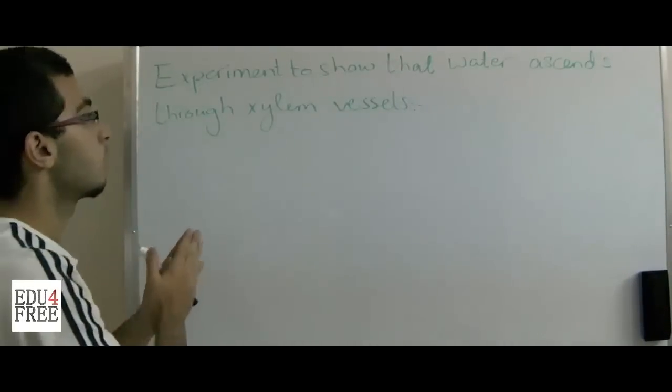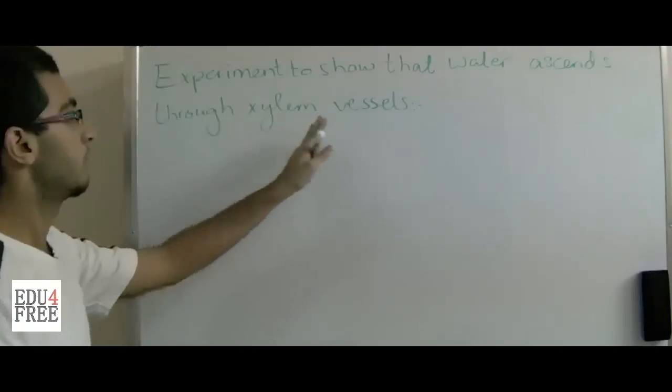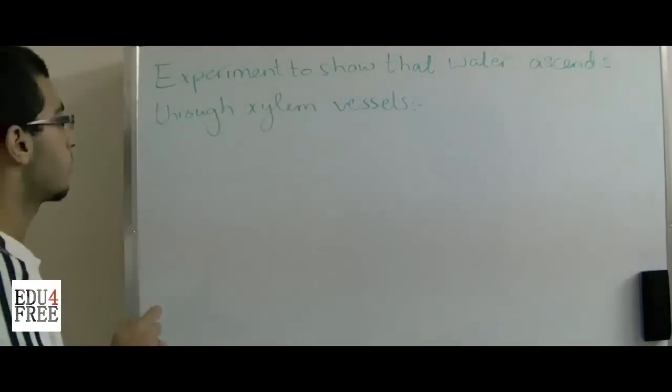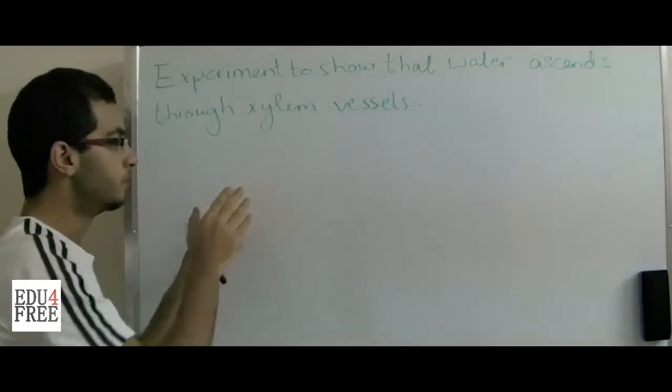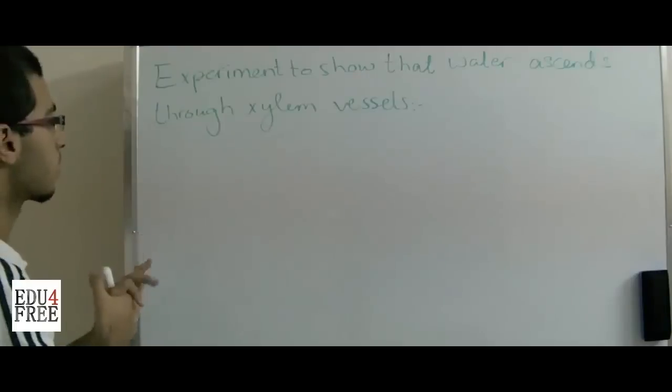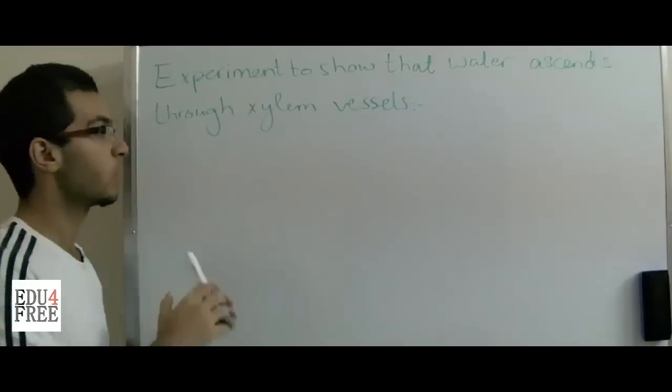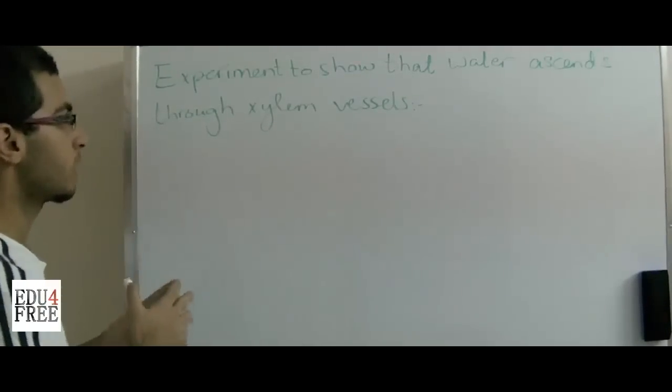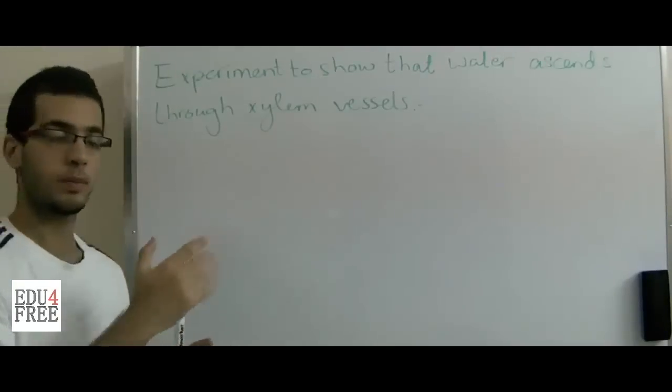this will prove that water ascends through xylem vessels. In other words, xylem vessels are the transport system which gets the water from the root system to the other parts of the plant.